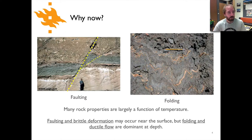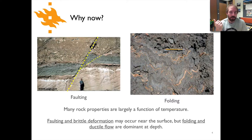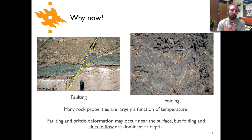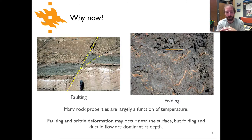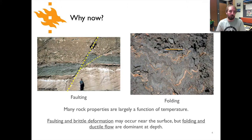Why do we want to talk about that now in the course? We started talking about elasticity, stress and strain, but most rock properties are largely a function of temperature. The conditions that determine whether rocks will be faulted or deform in a brittle manner versus folding or deforming in a viscous manner is basically a function of temperature. If rocks get warm enough they'll begin to flow, which is obviously quite important deeper in the crust compared to the faulting that takes place at the surface.